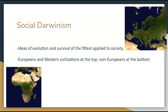With ideas of nationalism and imperialism rampant within Europe, Europeans sought an answer to justify their expansion over other regions. Darwin's theory of evolution provided the outlet needed to develop a theory to defend the social hierarchy created by European imperialism.